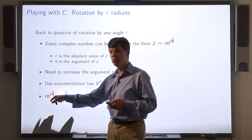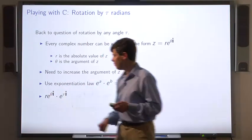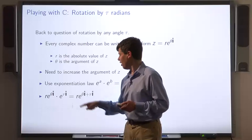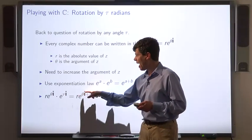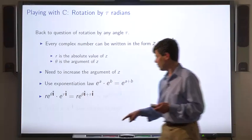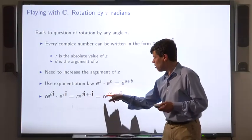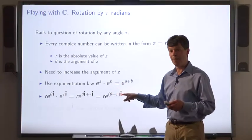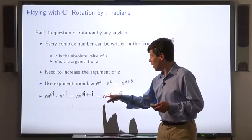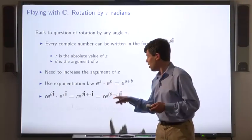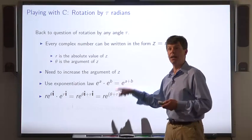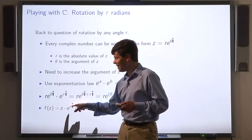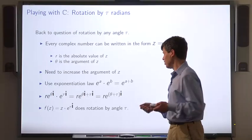So, if we start with the complex number z, which is r times e to the theta i, and we multiply it by e to the tau i, by the exponentiation law, that's the same as r times e to the theta i plus tau i. So, we get a complex number whose absolute value is the same as the one we started with, but whose argument is theta plus tau. So, the function that multiplies by e to the tau times i carries out rotation by an angle of tau.